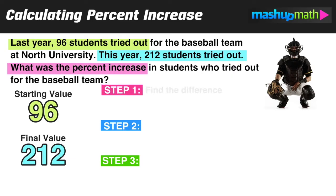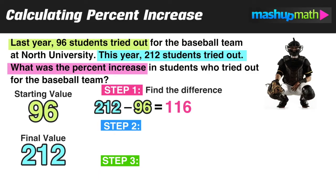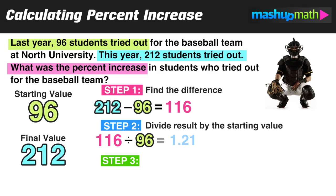Step one: find the difference. 212 minus 96 — the final value minus the starting value — equals 116. For step two, we take that result of 116 and divide it by the starting value of 96, which equals 1.21. As with the previous examples, make sure you express that result as a decimal.